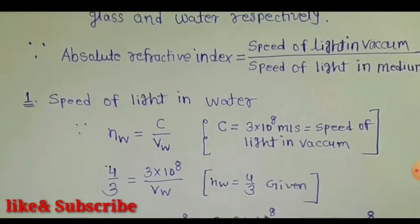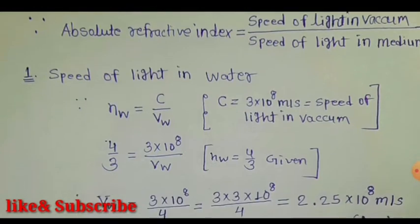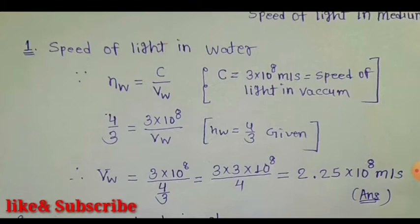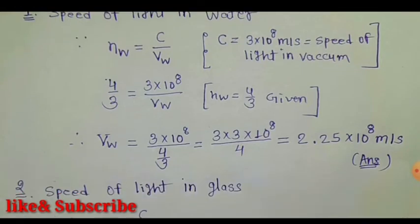First we find the speed of light in water. NW (refractive index of water) equals C divided by VW, where C is the speed of light in vacuum. Since NW is 4/3 and C is 3×10⁸, VW equals 3×10⁸ divided by 4/3. After solving, we get 9×10⁸ divided by 4, which gives 2.25×10⁸ meters per second. This is the velocity of light in water.